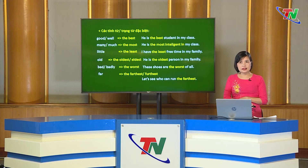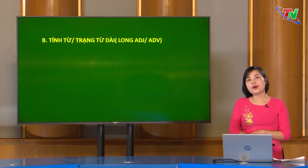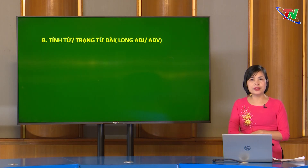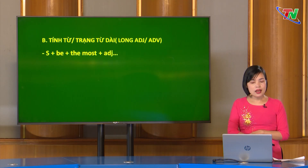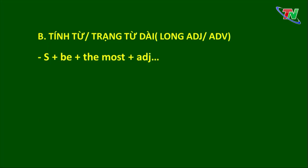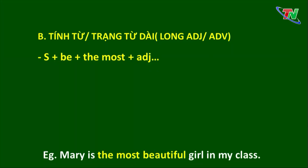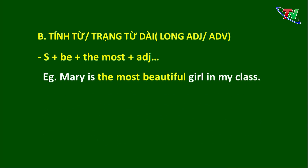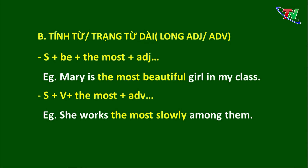Chúng ta sẽ chuyển sang so sánh hơn nhất của tính từ và trạng từ dài. Với tính từ dài: Chủ ngữ + be + the most + tính từ. Ví dụ: Mary is the most beautiful girl in my class. Với trạng từ dài: Chủ ngữ + động từ + the most + trạng từ. Ví dụ: She works the most slowly among them.